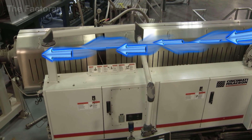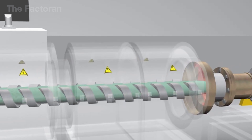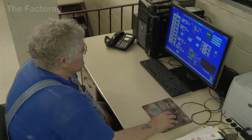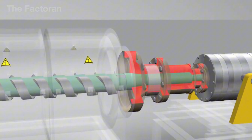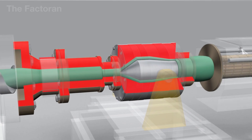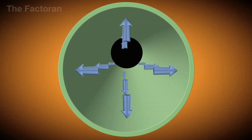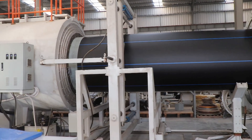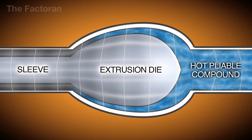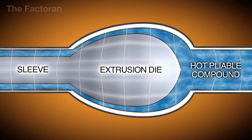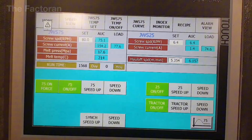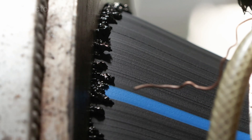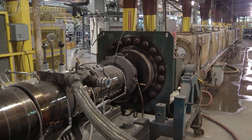The molten HDPE stream exits the extruder and is fed directly into the shaping die head, the component that directly determines the pipe's initial form. Inside the die head, the molten polymer is redistributed through an internal channel system, spreading evenly around the circumference to create a symmetrical flow pattern. At the die gap, the molten plastic is formed into a continuous hollow cylinder, while key geometric parameters such as outer diameter, inner diameter, and wall thickness are precisely established. The die head typically consists of a central mandrel and an outer die ring, with the gap between these two elements defining the pipe wall. At the moment it exits the die, the material remains soft and retains significant residual heat, but its geometric shape has already been clearly defined.